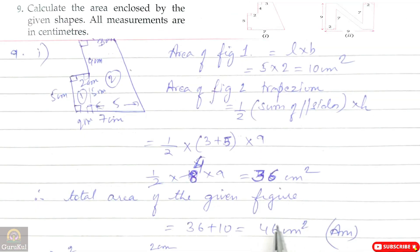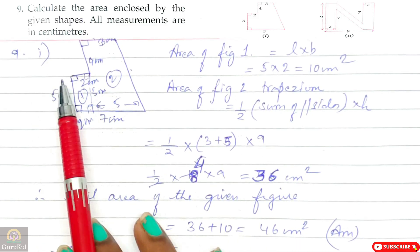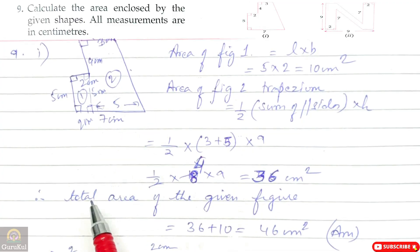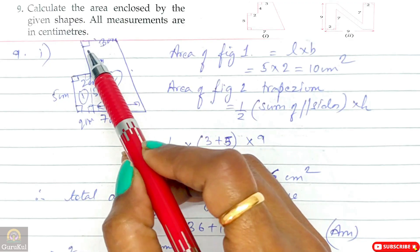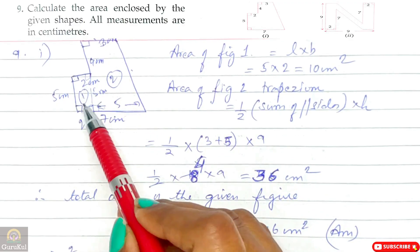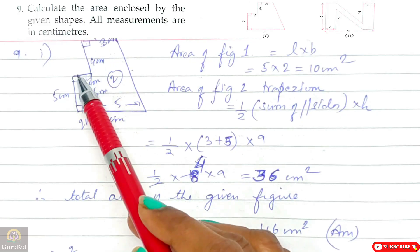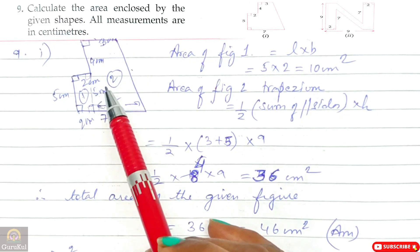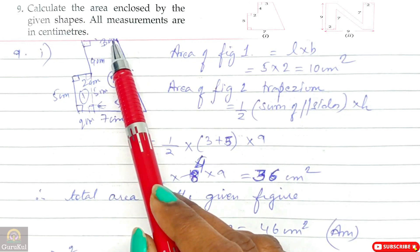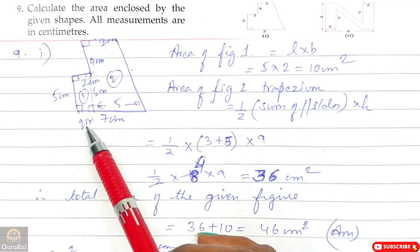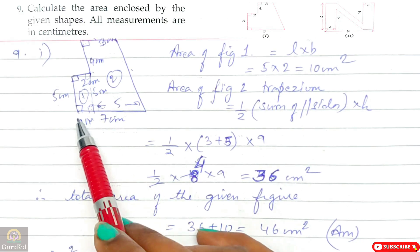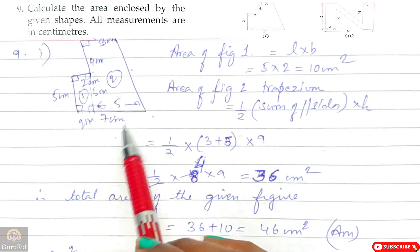Question number 9, part 1: Calculate the area enclosed by the given shape. All measurements are in cm. The figure has 90-degree corners on the left-hand side. Measurements given are: 3 cm, 4 cm, 2 cm, 5 cm, and the entire length is 7 cm. We divide this figure into two parts using a dotted line — one rectangle and one trapezium.